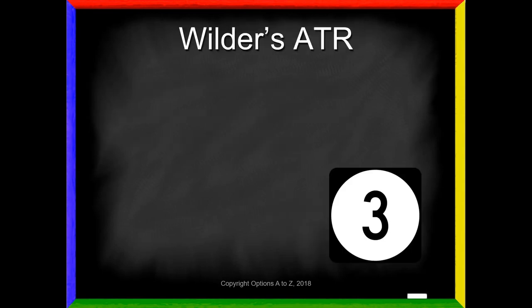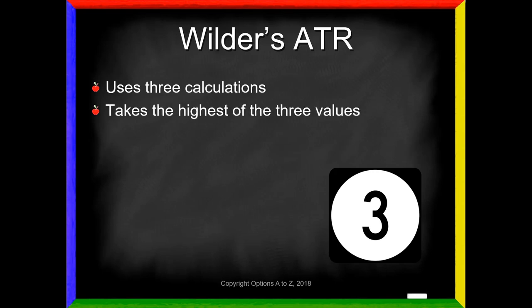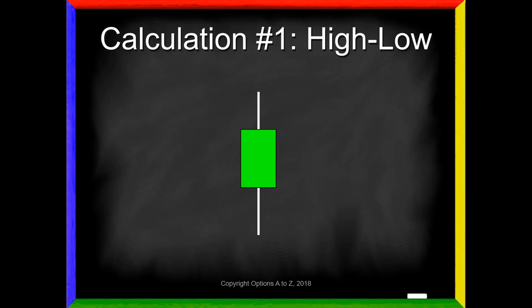As I mentioned, STARC Bands are really just an extension of Wilder's Average True Range. Let me give you a very quick background on Wilder's. He uses this concept called a true range, and then he just takes the average of these true ranges. To find the true range, he uses three calculations and takes the highest of these three values. Calculation number one: we're simply going to look at today's high minus today's low. Here's our high trade of the day at the very top of the shadow, and the low trade is down at the bottom. We subtract those out and store that value.